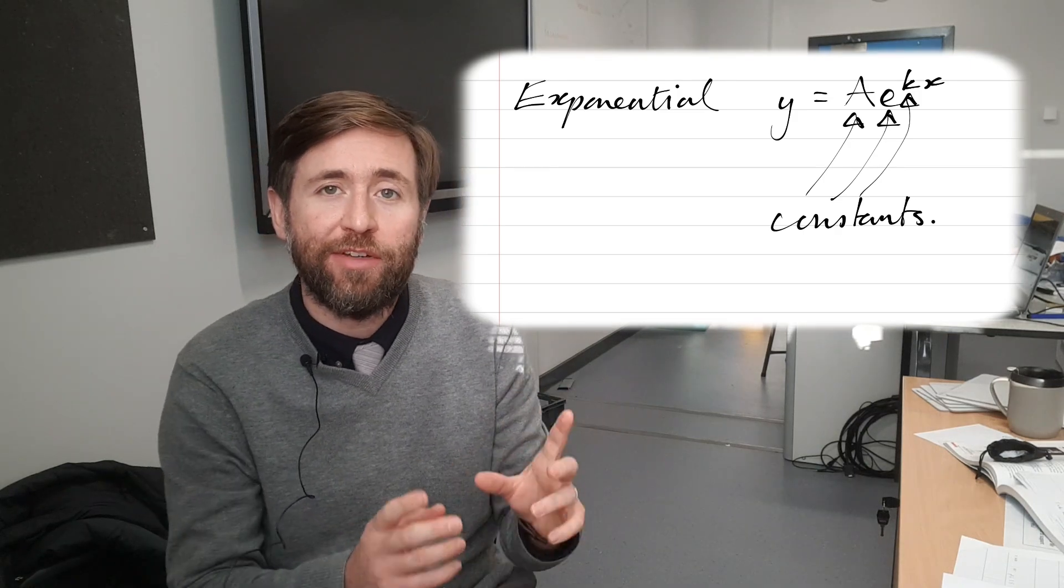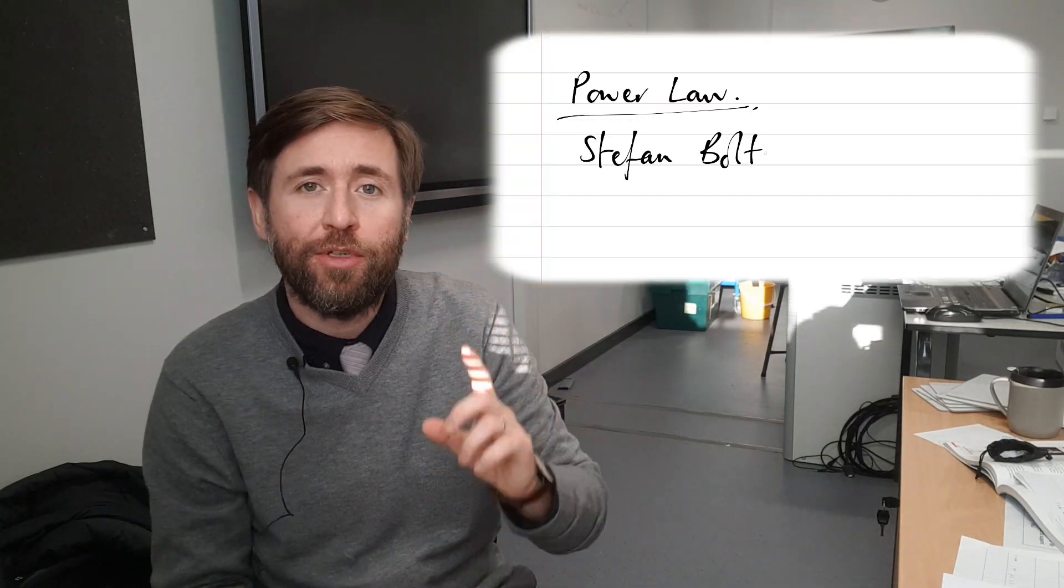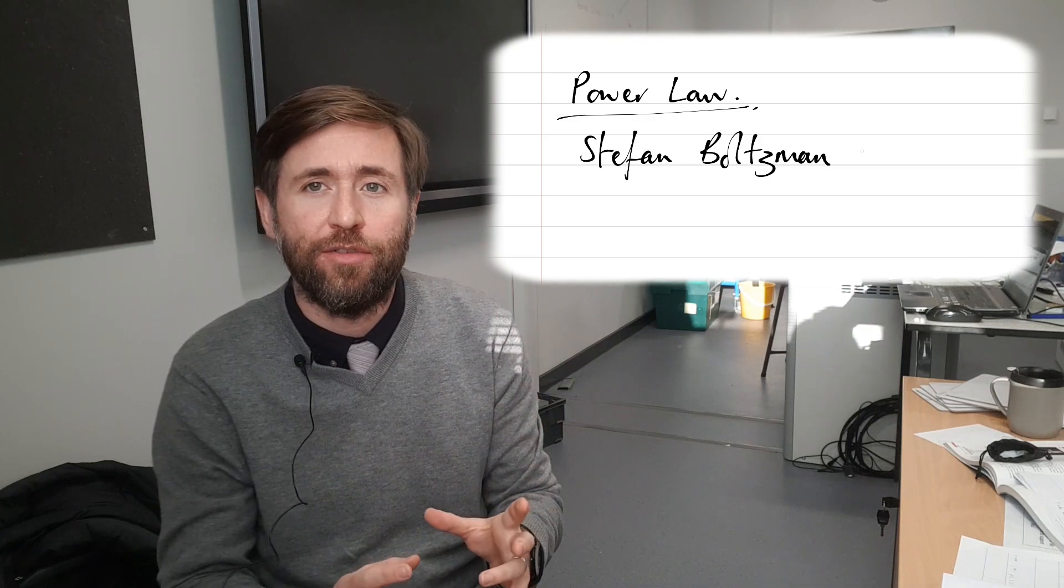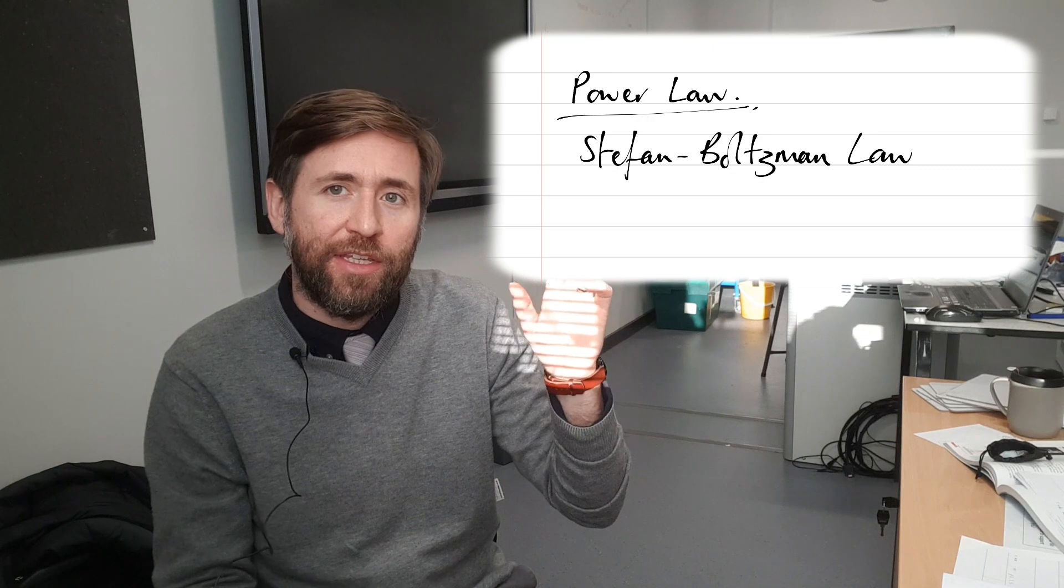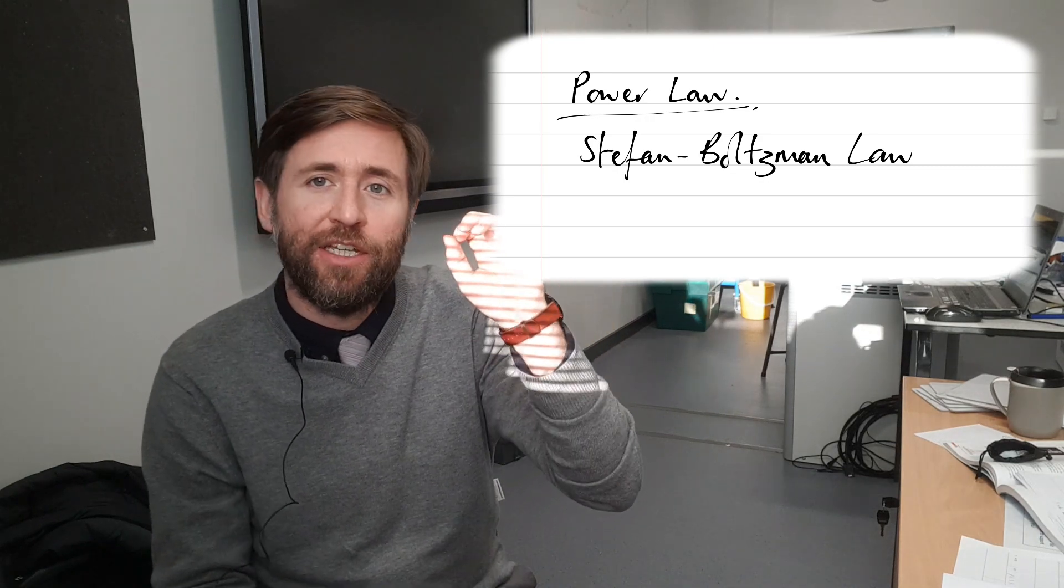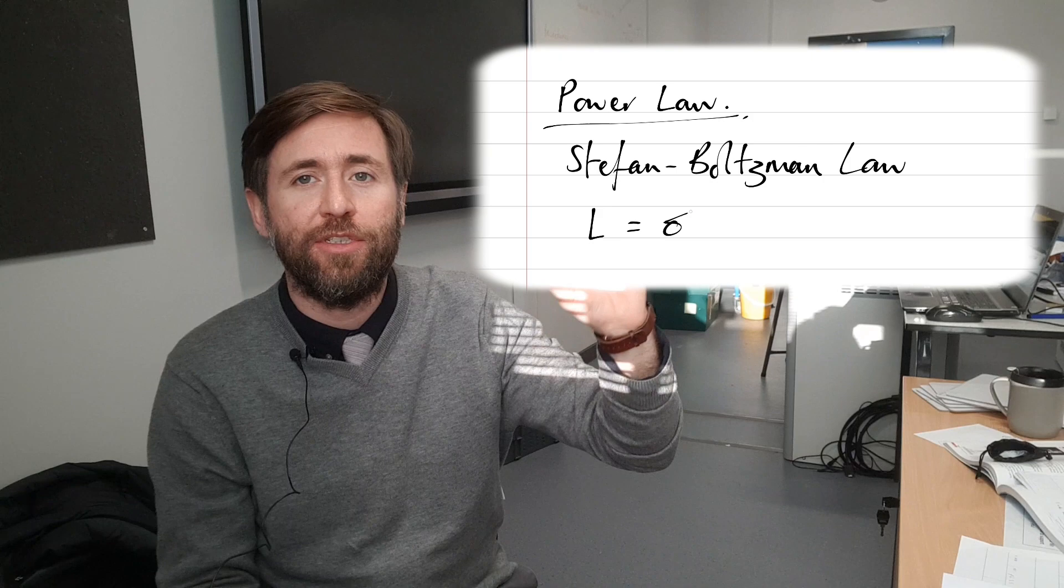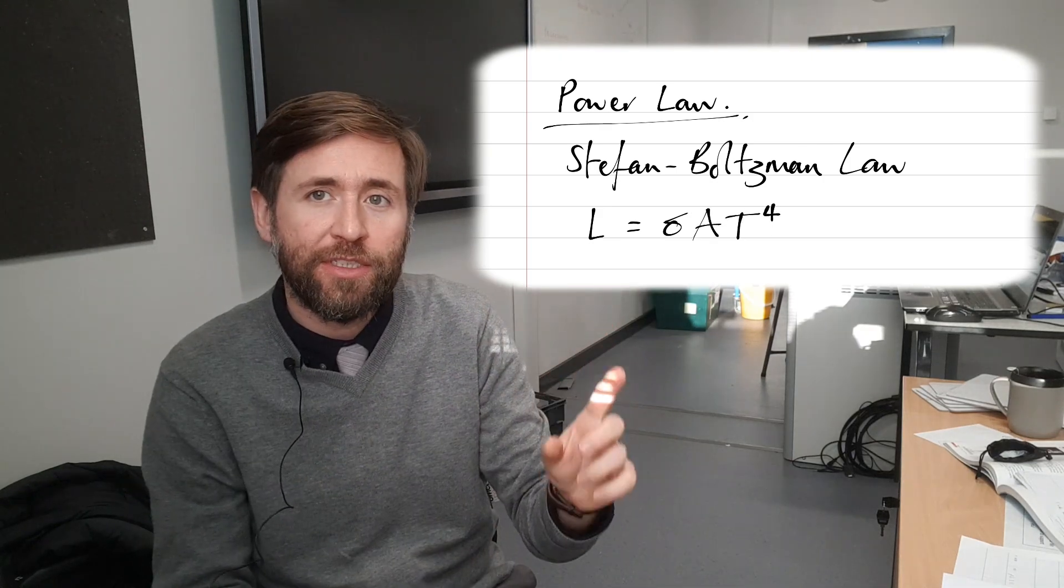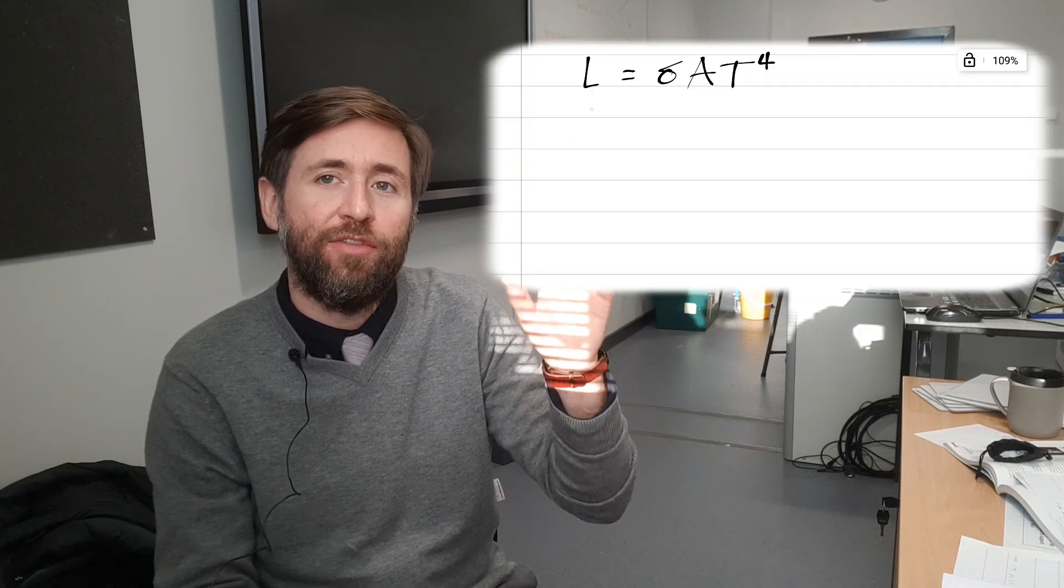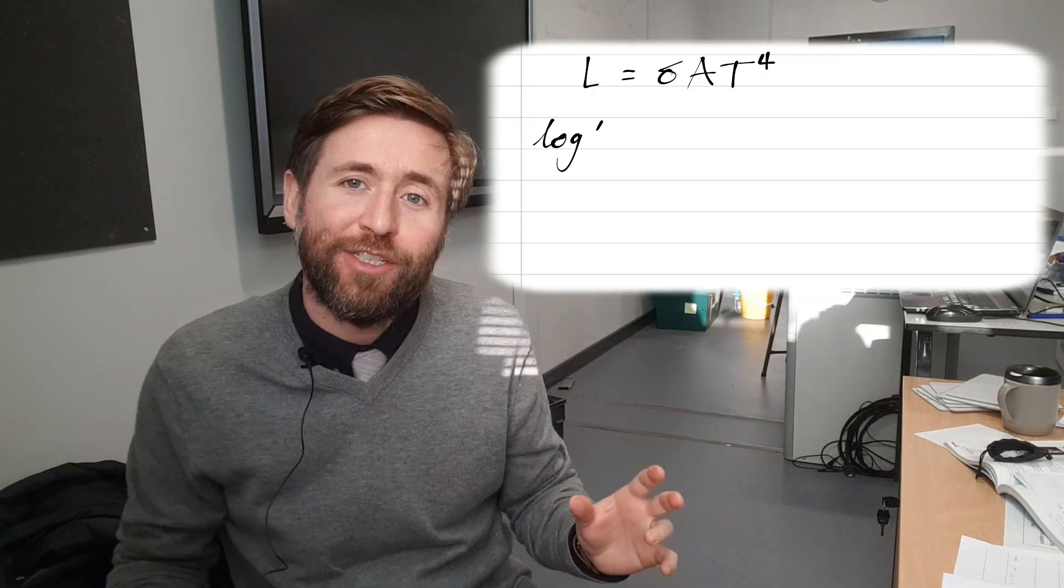So in this example, I'm using the Stefan-Boltzmann law, which relates the luminosity of stars or the power output of stars to their surface temperature. And the proportionality is luminosity is proportional to T to the power of 4, temperature to the power of 4. So that's a power law. Stefan-Boltzmann constant is fixed and the area of the star is also fixed for that given star.